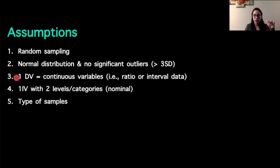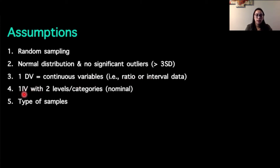Flowing through our decision tree or our study design, we have one dependent variable that's represented by ratio or interval data. And our independent variable — we have one with two levels or two categories that we are saying is nominal data.